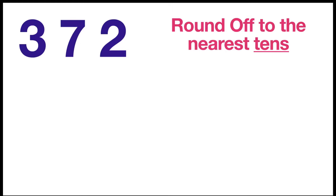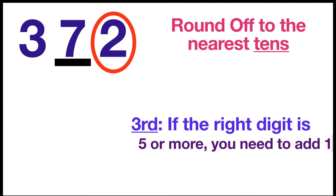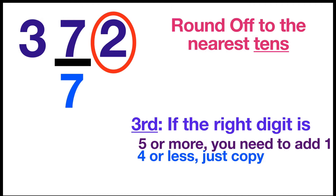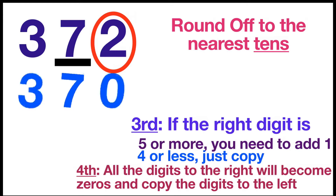We have another example: 372 round off to the nearest tens. Again, first, underline the place value — underline digit 7. Then look to the right. If the right digit is five or more, we will add one; but if it is four or less, just copy. Since our right digit is four or less, we will just copy digit 7. Lastly, all the digits to the right will become zero and copy the digits to the left. So the round off to the nearest tens of 372 is 370.